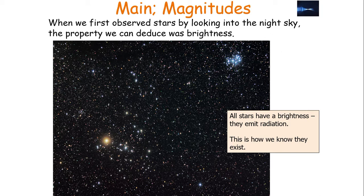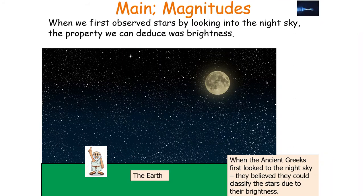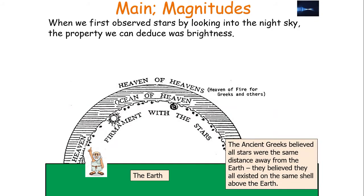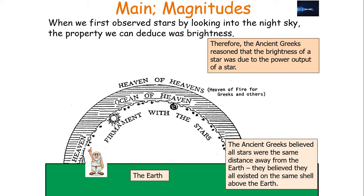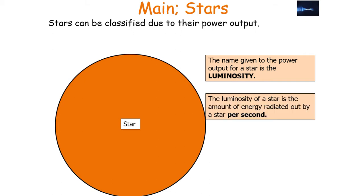All stars have a brightness because they emit electromagnetic radiation — this is how we know they exist. The brightness of a star is its most fundamental property. When the ancient Greeks first looked at the night sky, they believed they could classify stars due to their brightness, reasoning that the brightness was due to the power output of a star. The name we give to the power output of a star is called its luminosity — the amount of energy radiated by a star per second.